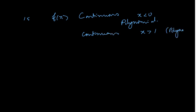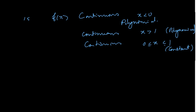We have to write this in the answer. These two are done. Now we are only worried about the third one — between 0 and 1, that is 0 less than x less than 1. That is the third interval. Here also it is continuous because it is a constant function. Constant value is 0.